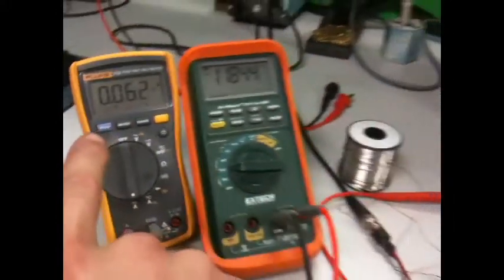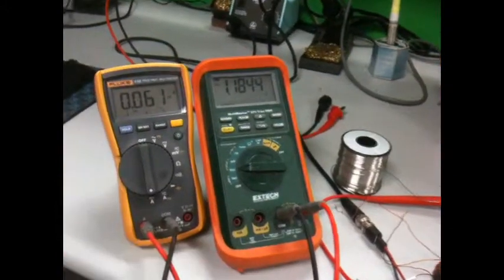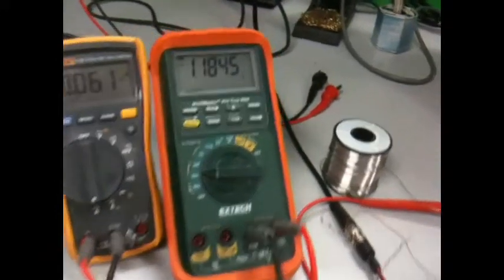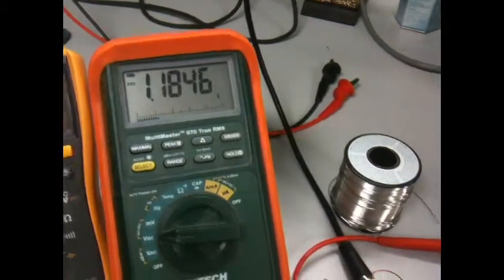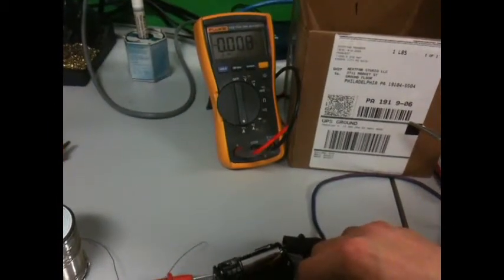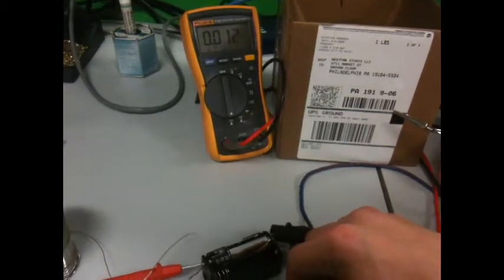Current draw is at 0.060 milliamps. 1.18 volts on the secondary. Now, as I adjust the potentiometer, which can be very hard to do with one hand, I go into the positive range.